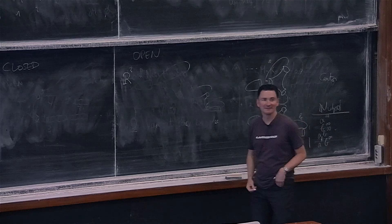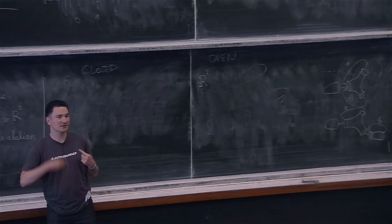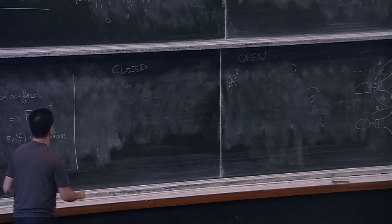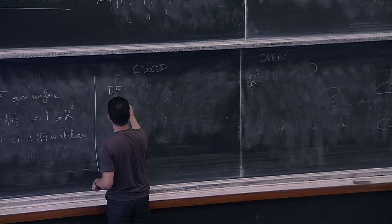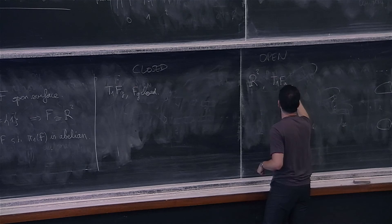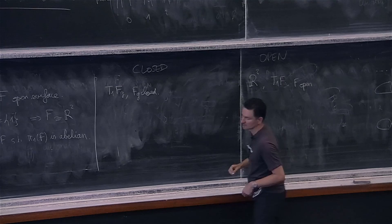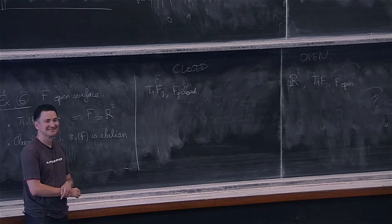Suggestions from the audience: the unit tangent bundle T¹(F_g) of a closed surface F_g — if the surface is closed, this will be a closed three-manifold; if it's open, it will be an open one. A knot complement in S³: if you take S³ minus a knot, it's an open manifold; if you take the complement of an open neighborhood, it's a compact manifold with boundary. The product of a surface Σ with ℝ is another example.